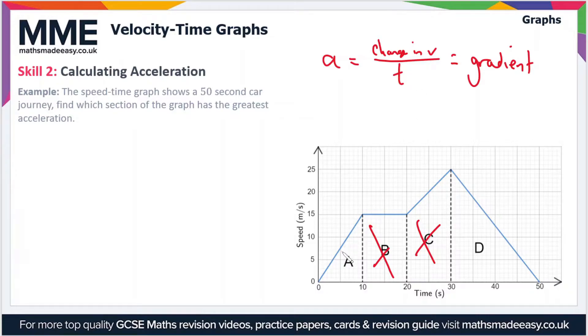I'm actually going to go ahead and work out what the gradient is in each of these sections. In section A, we've gone from a speed of zero to a speed of 15 meters per second. So the change in velocity is 15 minus zero, and the time span is 10 seconds. So divided by 10, we have 15 divided by 10, which is 1.5 meters per second.